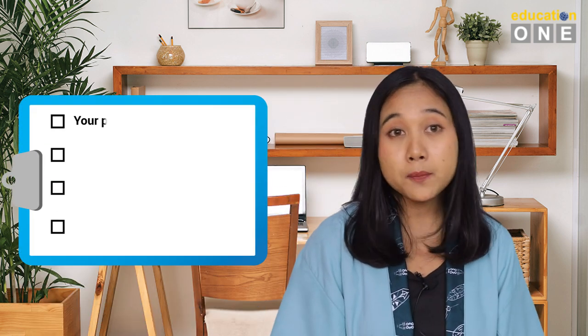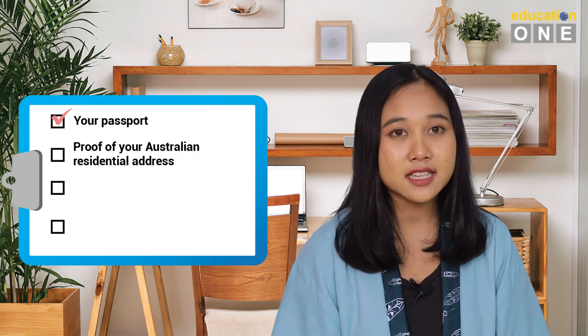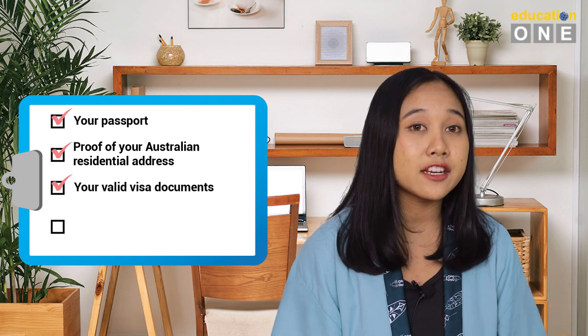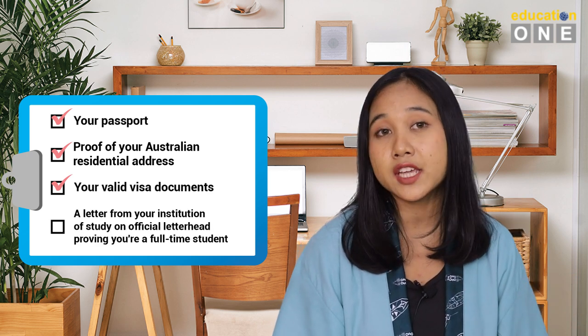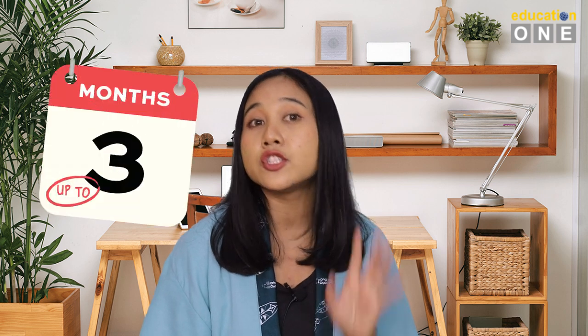Now let's talk about the requirements. Each bank may have its own regulations, but typically you'll need to provide your passport, proof of your Australian residential address, your valid visa documents, and a letter from your institution of study on official letterhead proving you're a full-time student.